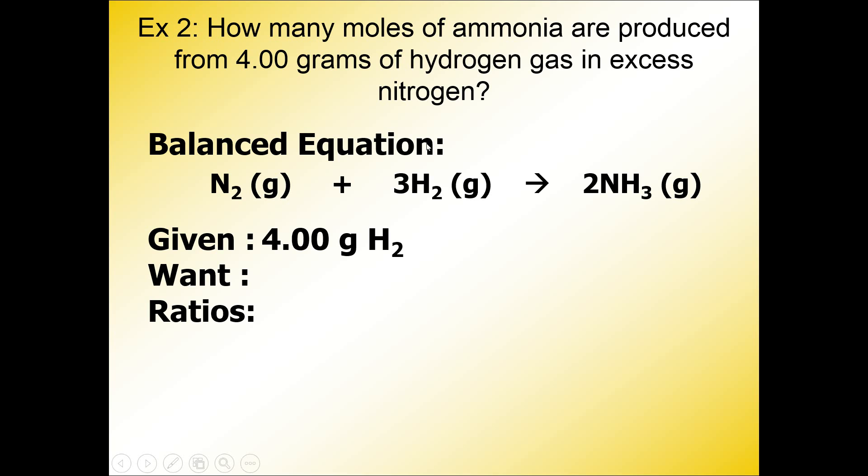The want is the question, and this question reads how many moles of ammonia are produced. So if you don't know what the formula of ammonia is, you can start to look at your balanced equation and use process of elimination to determine this is nitrogen, that's hydrogen, and if you're not sure what that is, well, that must be ammonia.